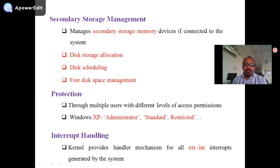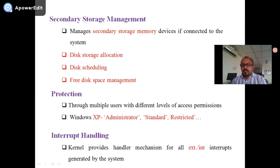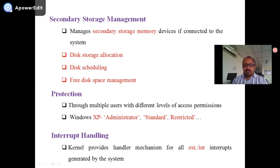Protection is provided through multiple users with different levels of access permissions. For example, Windows XP uses administrator, standard, and restricted levels — it gives permissions for use of the operating system accordingly. Next is interrupt handling: the kernel provides a handler mechanism for all external and internal interrupts.